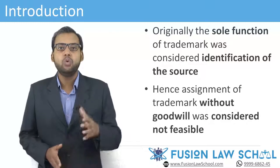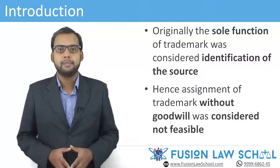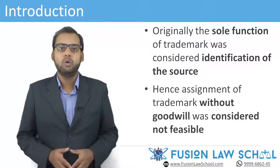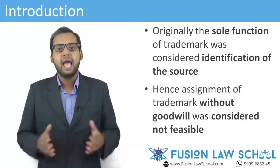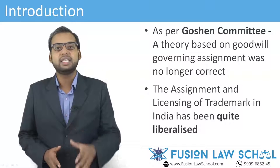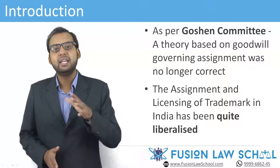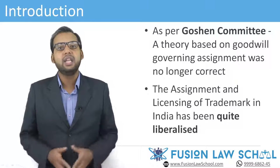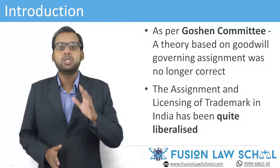Since originally the sole function of a trademark was considered as identification of the source — both in the UK and USA — trademark and goodwill of business were considered inseparable, and assignment of trademark without goodwill was not feasible. The Gaussian committee reported that such a theory was no longer universally correct. They accepted the commercial view that goodwill is inherent in the trademark itself, and thus UK and USA began to accept assignment without goodwill, paving way for lessening of the relevance of the source provided the proprietor exercises sufficient control over the quality of the goods.